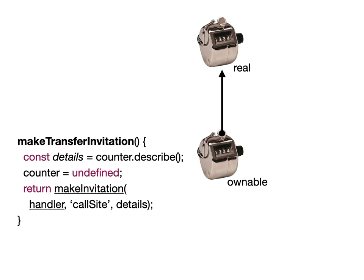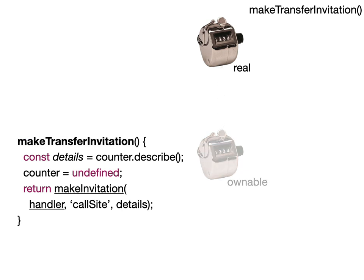Since it's given out, they can invoke makeTransfer invitation. When they do, makeTransfer invitation first sets counter to undefined, severing the access from the ownable counter to the original counter, rendering the ownable counter at this point useless.